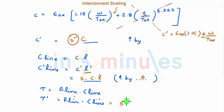So total tau is R line increasing by a factor of s and C line increasing by a factor of s. So my delay is increased by s square.